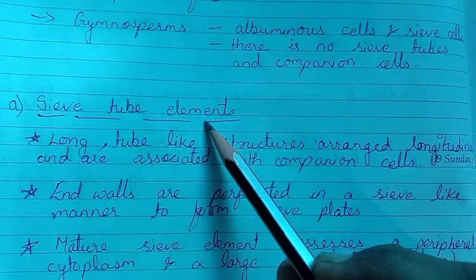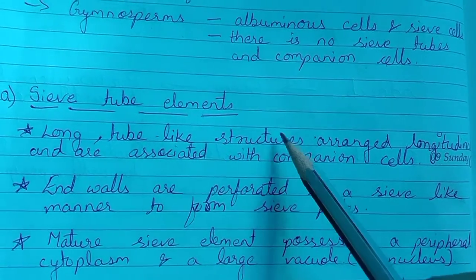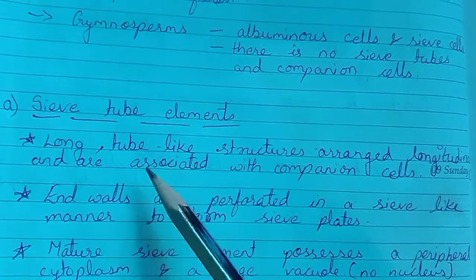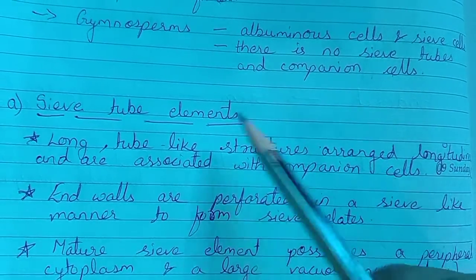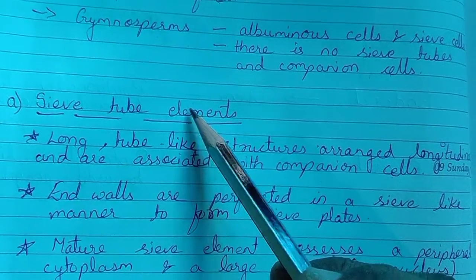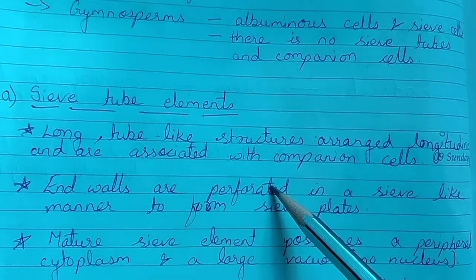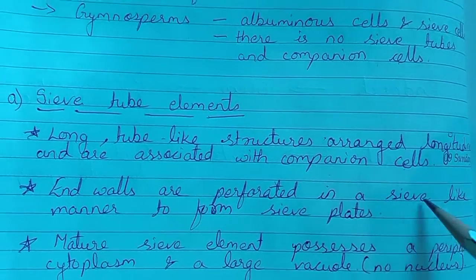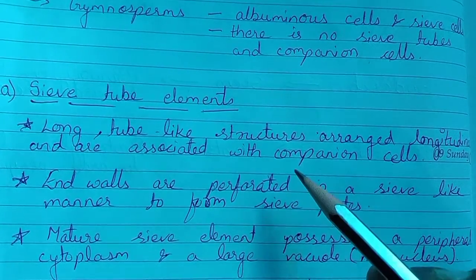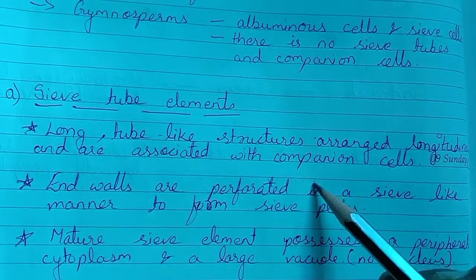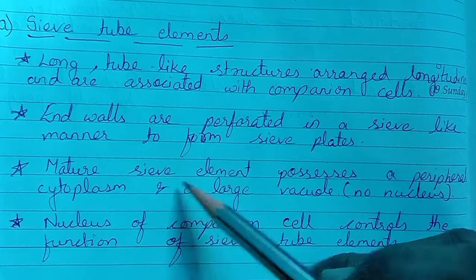The first component is sieve tube elements. These are long tube-like structures arranged longitudinally and are associated with companion cells. The end walls are perforated — that means holes are present in a sieve-like manner to form sieve plates. There are small perforations in the sieve plates.